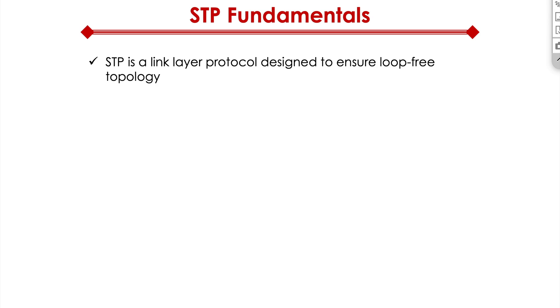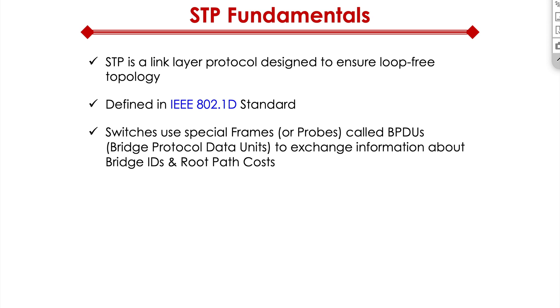Now let's jump into STP fundamentals. As I mentioned, it's a link layer protocol. It's a layer 2 protocol designed to ensure loop-free topology. It's defined in IEEE standard 802.1d. So it's an open standard. It's not proprietary to Cisco, which is good. Switches use special frames called BPDUs or probes to exchange information about bridge IDs and root path costs. And we'll talk about those details momentarily. You'll be an expert in a few minutes. But before we get there, what are BPDUs? They are Bridge Protocol Data Units. BPDUs are essentially spanning tree advertisements. BPDUs are sent out all active ports on a switch every two seconds by default.